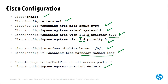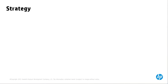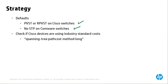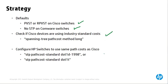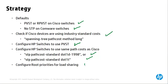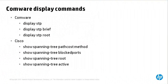This command enables all access ports to become PortFast ports, or using the industry standard term, edge ports. As a strategy when integrating HP switches into a Cisco environment and configuring them to use PVST: remember that the defaults on Cisco are PVST or Rapid PVST, HP switches do not use spanning tree by default, check which costs are being used by the Cisco switches, configure your HP switches to use PVST, configure root priorities for load sharing, enable spanning tree on the HP switches, and check the topology. Here is a list of display commands that allow you to view the spanning tree setup and configuration — very useful for checking if spanning tree is operating correctly.